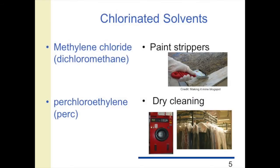You heard in earlier webinars about halogens and the many useful functional properties they can produce as well as the health hazards. Here we can see how chlorine can be added to a hydrocarbon solvent to make them less flammable while still retaining many useful properties. One example of a chlorinated solvent is methylene chloride or dichloromethane, used very effectively as a paint stripper. Perchloroethylene or PERC is used very widely in dry cleaning as a solvent. You can also use other halogens like bromine or fluorine to make other halogenated solvents.